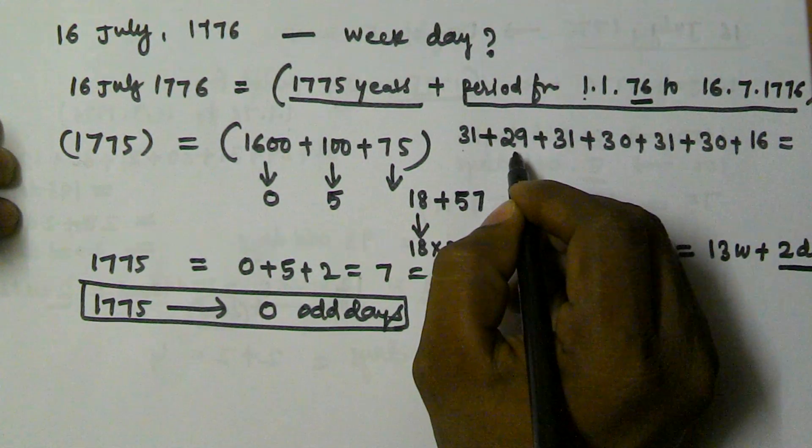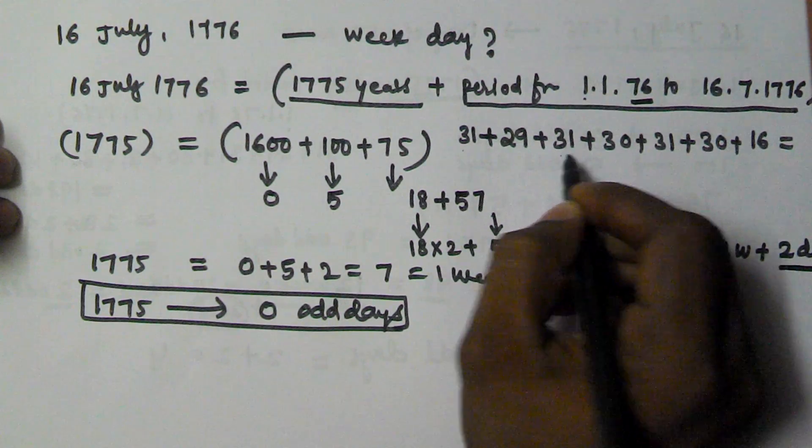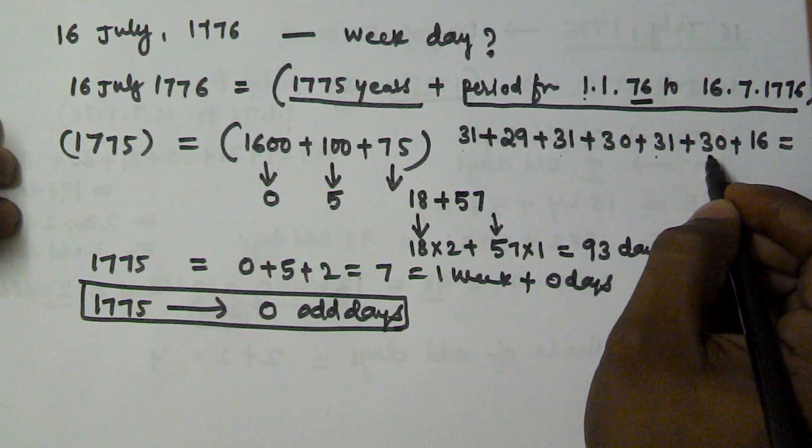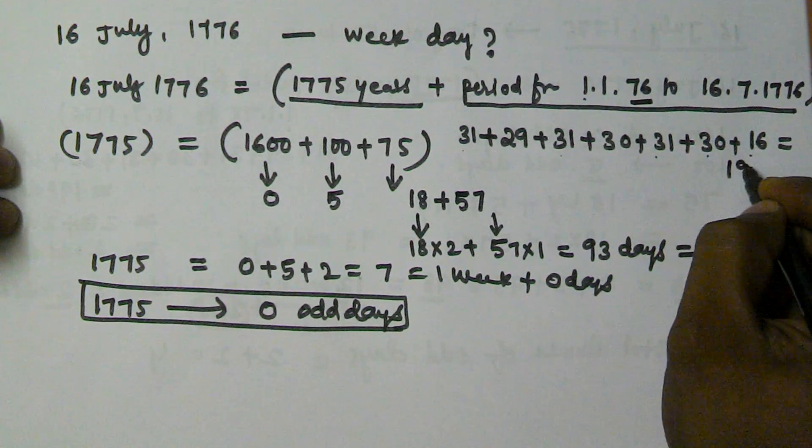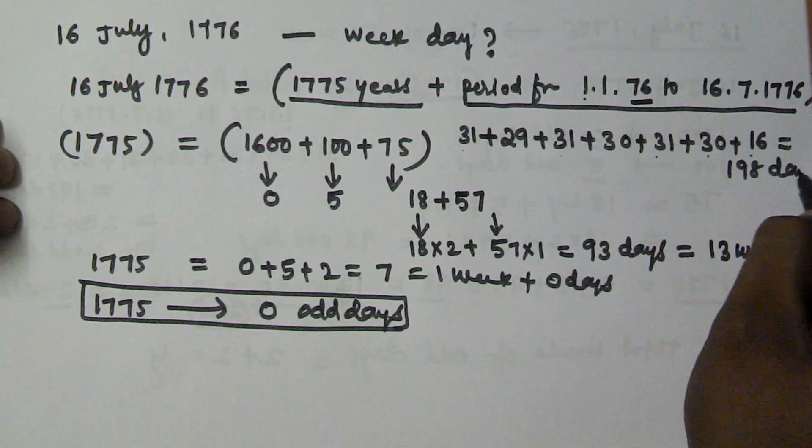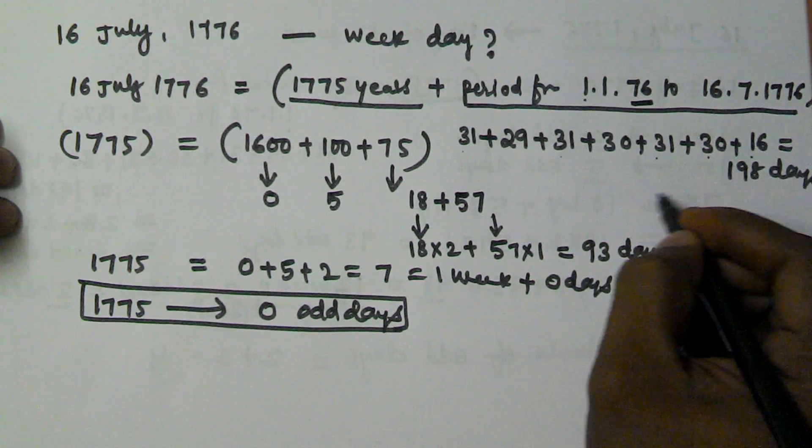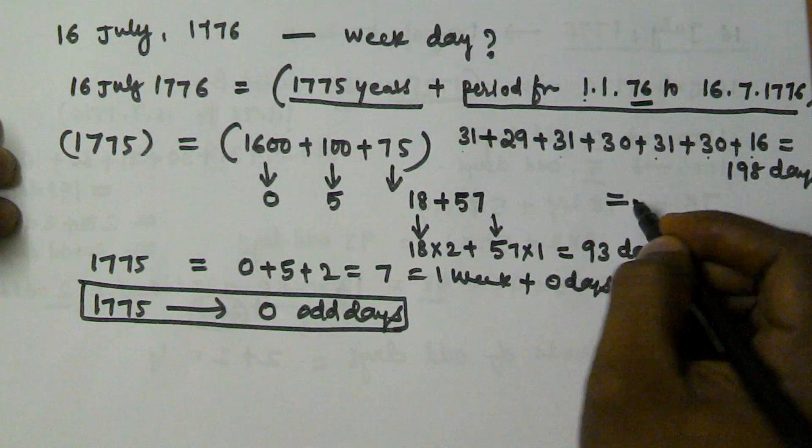31 plus 29 is 60, 91, 121, 152, 182 plus 16. So that is going to be 198 days. 198 days is equal to...